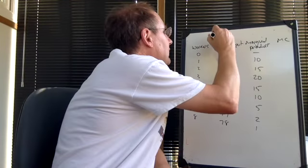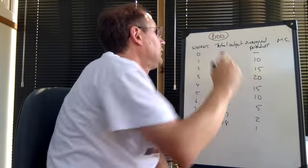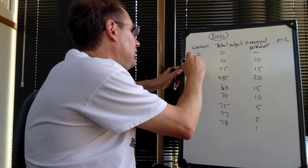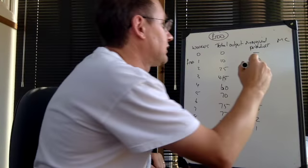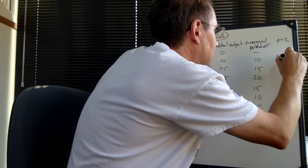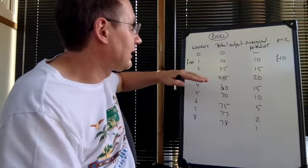What we know is that each worker costs £100 to employ. So the first person we employ, we pay £100 to. They produce 10 units. So effectively, assuming there are no other costs, that's £10 each.